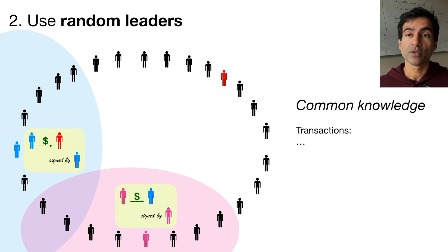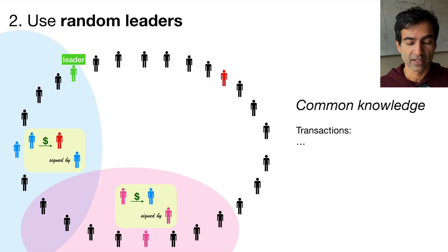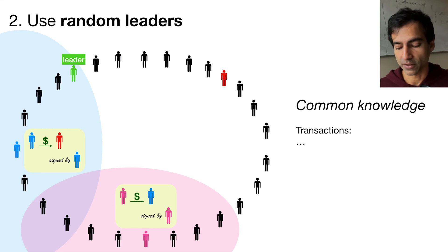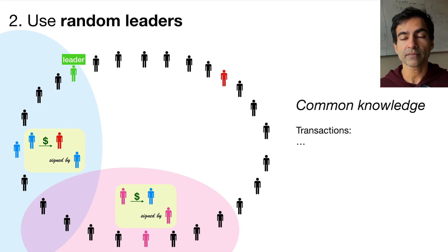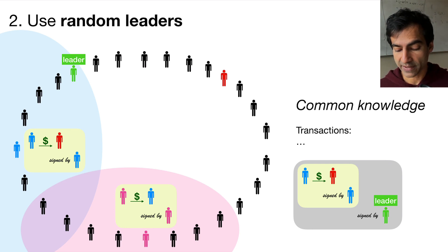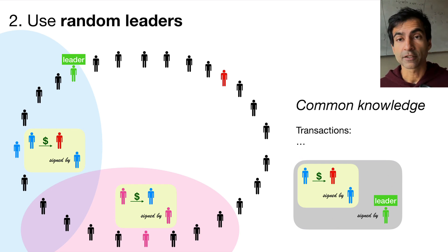Bitcoin solves this problem by using random leaders to maintain the common knowledge. At any particular point in time, there will be a randomly chosen leader, and this leader will have the sole ability to add to the common knowledge. We have some common knowledge that's been maintained up to this point, and the leader now has the authority to add a transaction to this common knowledge. The leader will take a transaction that they have heard about, sign the message that has information about the transaction, and add it to the common knowledge.